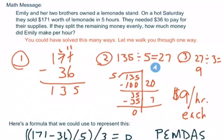Then you could have taken the $135, divided it by five, because they worked for five hours. And that gives you $27. You can see here, I did partial quotients in order to solve that. And I did five times two is ten, so five times twenty is a hundred.